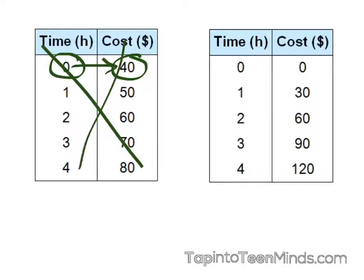So this is not a direct variation. However, looking at the second table, we see time is 0, the cost is 0, and thus, this must be a direct variation.